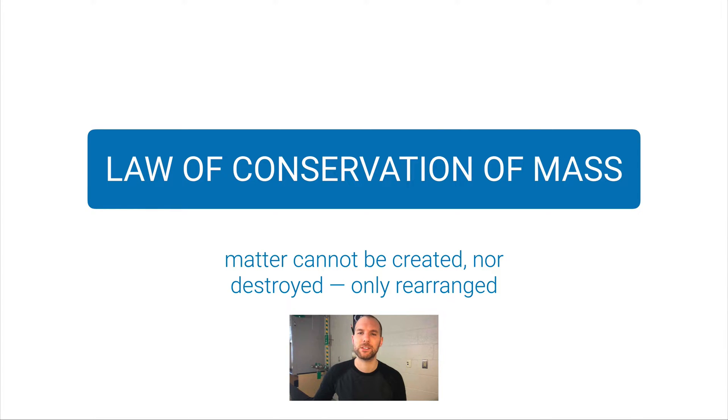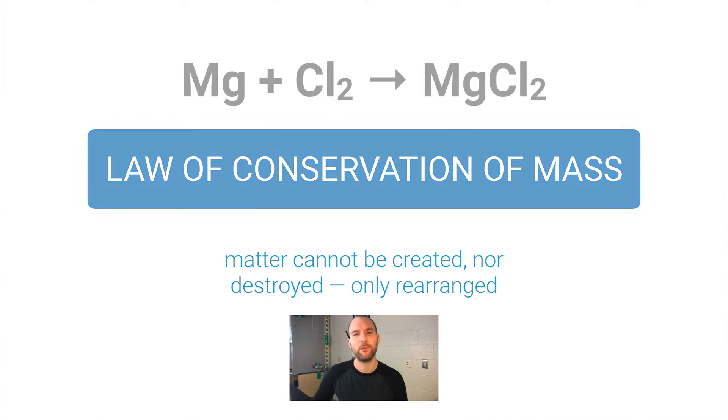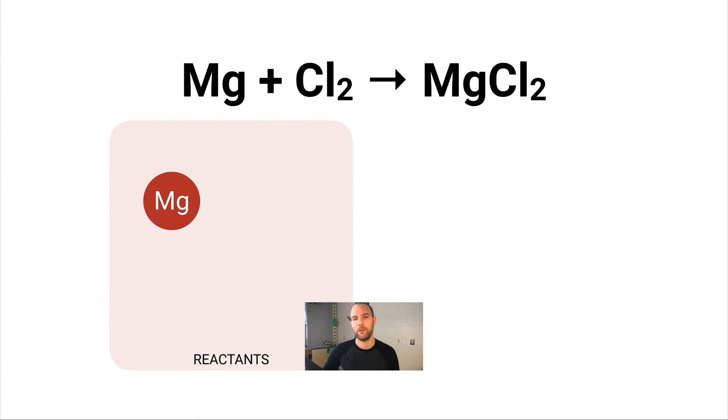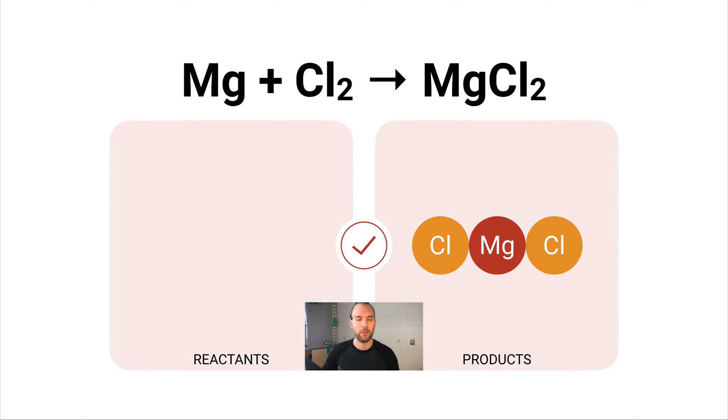So why do we have to balance an equation? Well, if I had an equation like this, you can clearly see that for every magnesium I have two chlorine atoms going in. That's a chlorine molecule. And then the products would just simply be MgCl2 together. Now that one happens to be balanced just on its own.